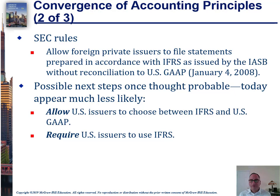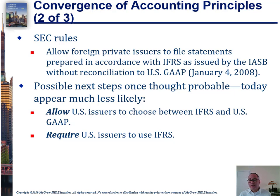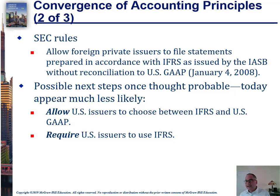The SEC got involved a few years ago, allowing foreign companies to issue financial statements under IFRS without the previously required reconciliation to US GAAP — showing income under both IFRS and US GAAP and explaining the differences. The SEC eliminated that reconciliation requirement in 2008. It's possible the SEC could allow US companies to choose between IFRS and US GAAP, though I find it interesting that the government encourages IFRS adoption while simultaneously keeping key provisions that discourage it.